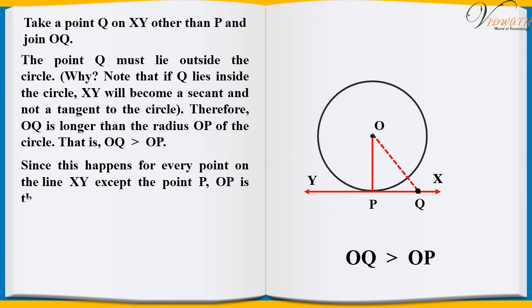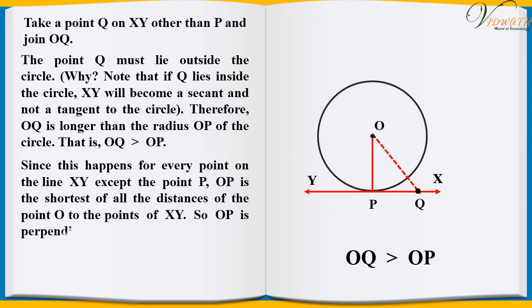Since this happens for every point on the line XY except the point P, OP is the shortest of all the distances of the point O to the points of XY. So, OP is perpendicular to XY.